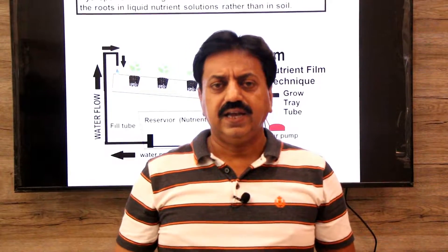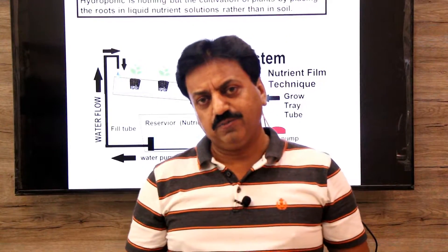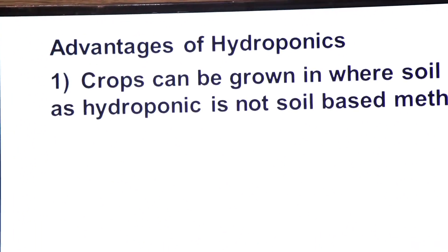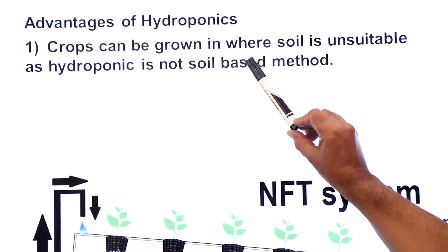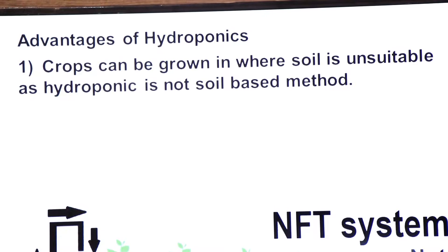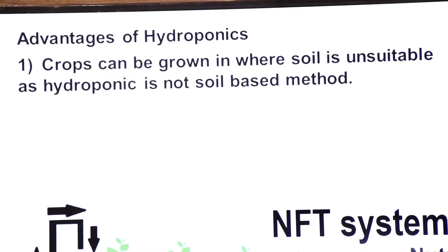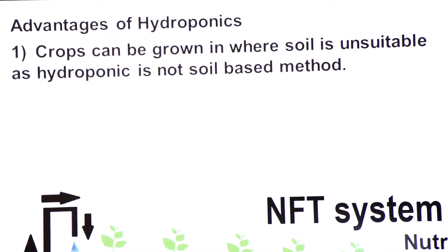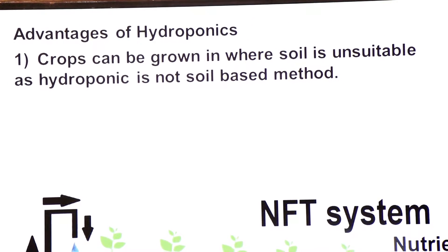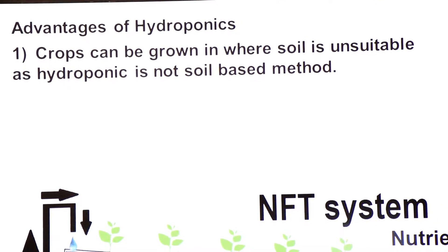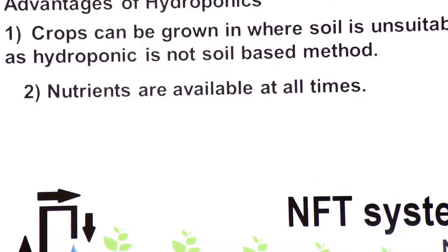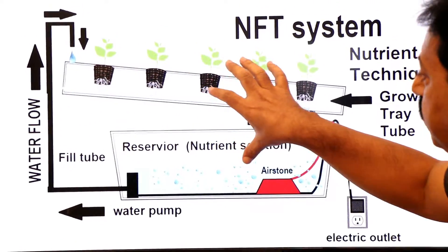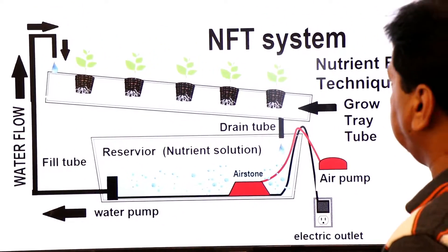Now we will discuss the advantages and disadvantages of hydroponics. First, the advantages: Number one — crops can be grown where the soil is unsuitable, as hydroponics is not a soil-based method. Where soil quality is poor or nutrients are lacking, the hydroponics technique can be used. Number two — nutrients are available all the time, because this is a manmade reservoir and through continuous cycling we provide a continuous supply of nutrients to the roots.